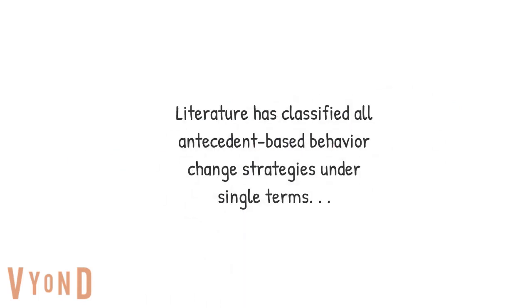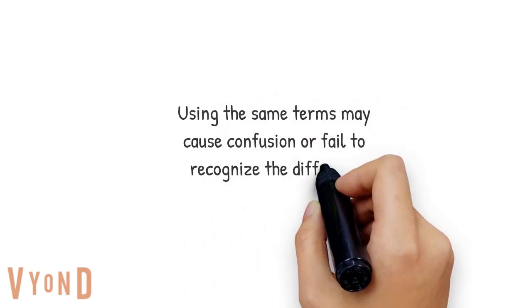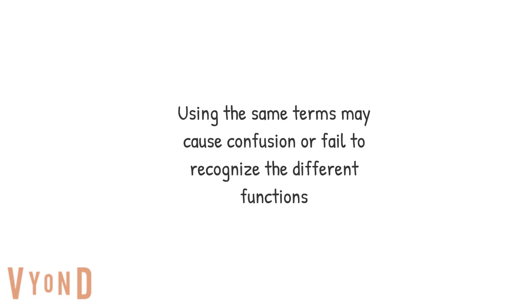Antecedent-based behavior change strategies have all been classified under single terms. These terms include antecedent procedures, antecedent control, antecedent manipulations, and antecedent interventions. And these actually all have different meanings and functions.